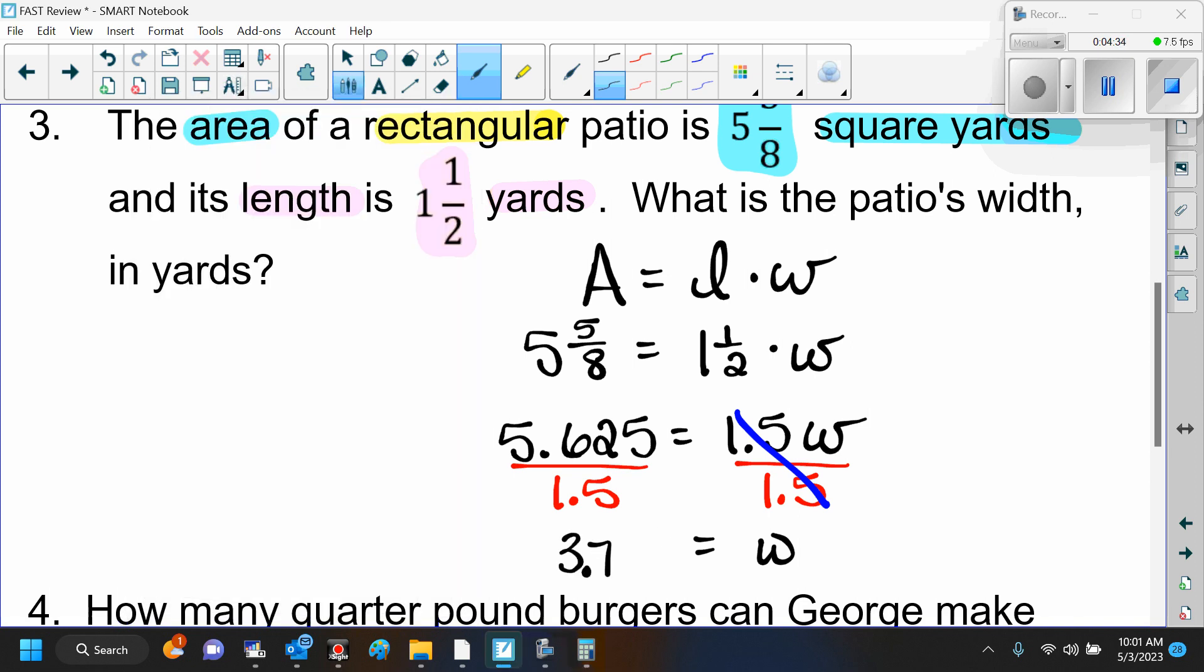So the width is 3.75. Now what about this label? What are my units? Yards, right? Is it going to be yards squared or just yards? Just yards. Very good. Is everybody clear? Yes.